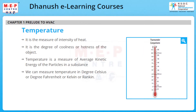Temperature is the measure of intensity of heat. It is the degree of coolness or hotness of an object. Temperature is a measure of average kinetic energy of the particles in a substance. We can measure temperature in degrees Celsius, degrees Fahrenheit, Kelvin, or Rankine.